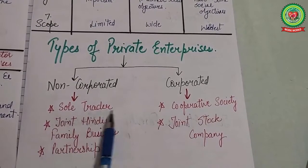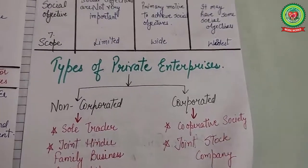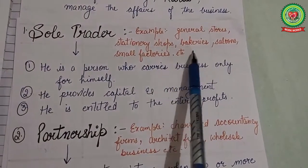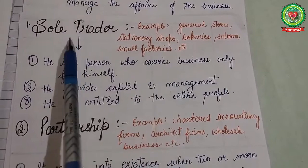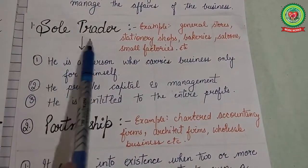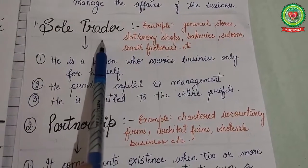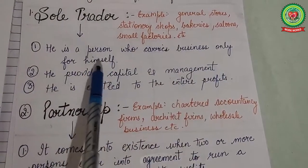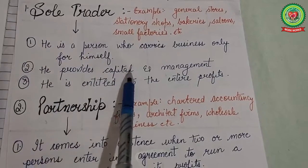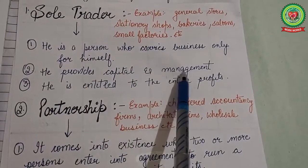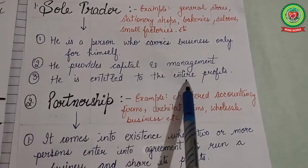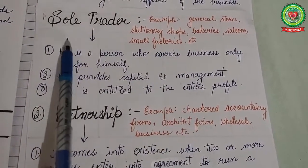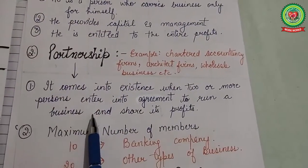The first type is sole trader. Examples include general stores, stationery shops, bakeries, and small factories. A sole trader is a person who carries on business only for himself. He provides capital and management for the business and is entitled to the entire profits of the business. Such a business is called a sole trader.